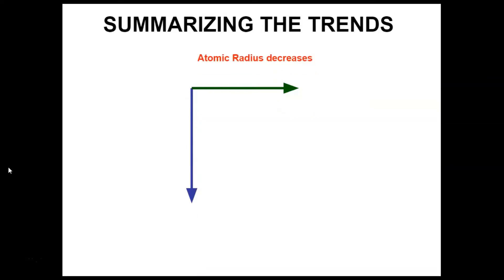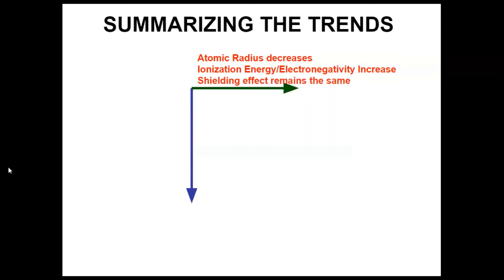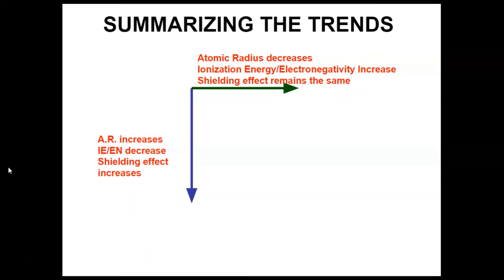Let's summarize these trends. As I go across a period: atomic radius decreases, ionization energy and electronegativity increase, and shielding remains the same because you're not changing the number of occupied energy levels. As I go down a group: atomic radius increases, ionization energy and electronegativity decrease, and shielding increases.